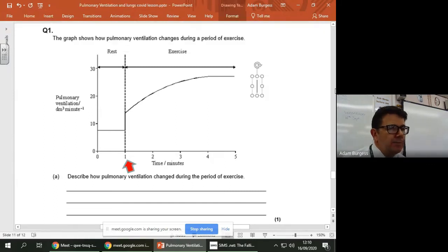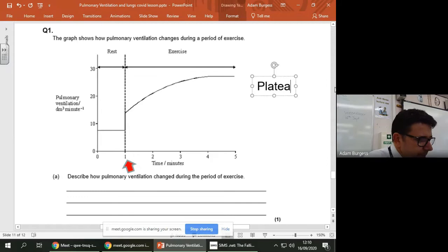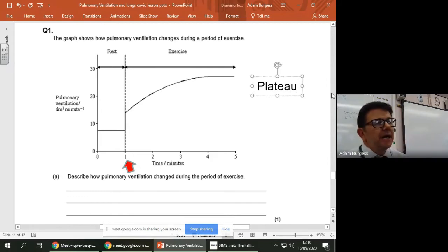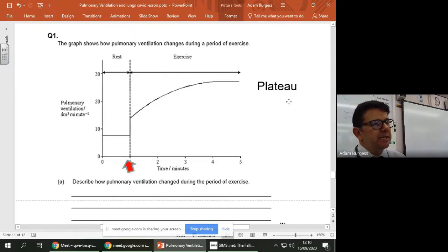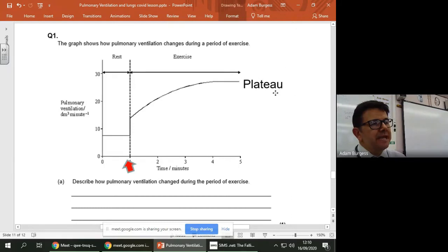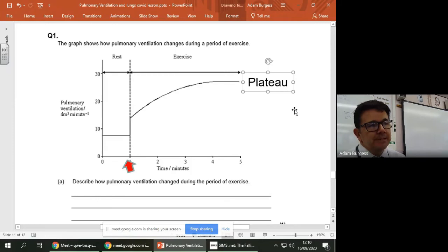Okay. Now, I like that word plateau. It's hard to spell as well. Plateau just means that the graph has leveled off, so it's leveled off. So you would need to say that pulmonary ventilation increases up until about four minutes, and then it plateaus.